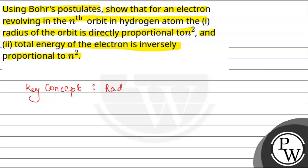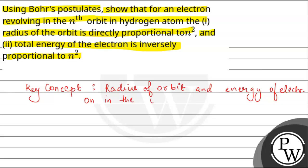We have two things to find: radius of orbit, and energy of electron in the orbit. For the hydrogen atom's electron, we first need to find the radius of its orbit and show that it is directly proportional to n square. In the second case, we need to show that total energy is inversely proportional to n square.